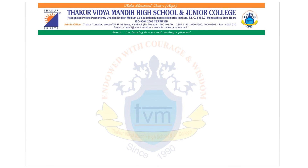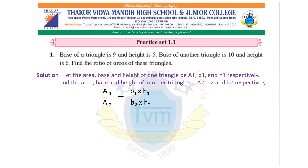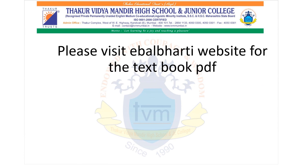Let us solve one of these sums; you can practice exercise 1.1 which is based on this property. Base of one triangle is 9 and height is 5; base of another triangle is 10 and height is 6 — find the ratio of their areas. Please visit the eBalbharti website for the textbook PDF; you can get all Standard 10 textbooks from that website. Thank you.